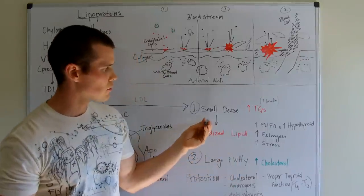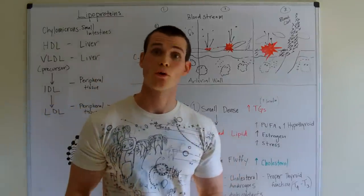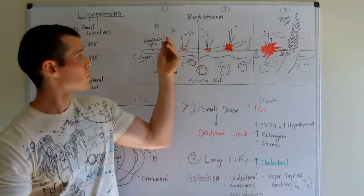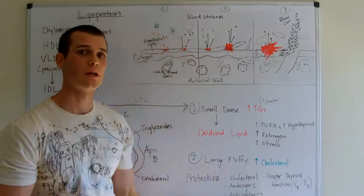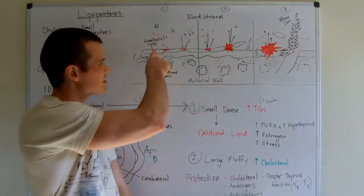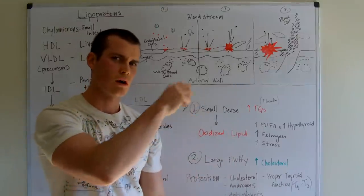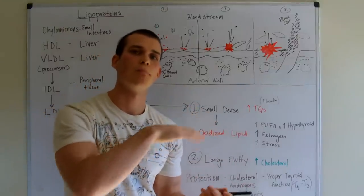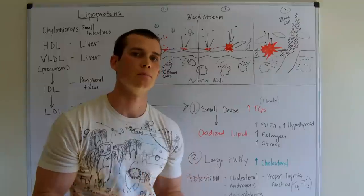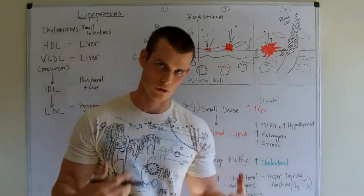So what we're going to look at is the small dense ones, like I mentioned, are atherogenic. Small dense ones are represented by the red dots. Red dots are going to act like little sand particles, and they're going to stick to the arterial walls. So the small dense ones are going to stick and they're going to build up that plaque. And that's the beginning of what we call atherosclerosis.